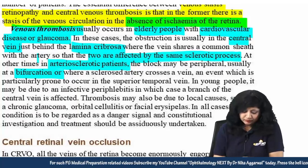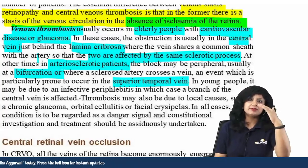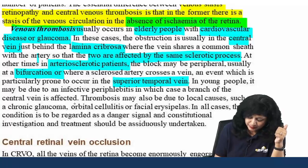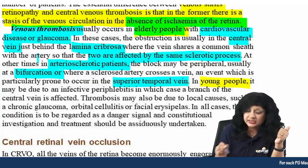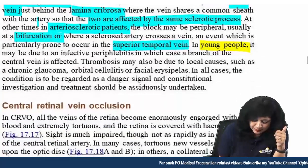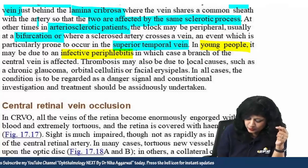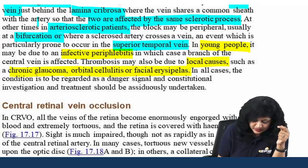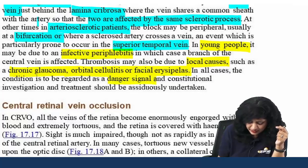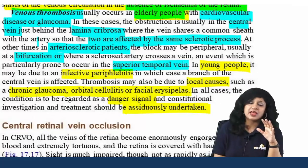Arteriosclerotic block may be peripheral or at the bifurcation, and venous thrombosis is particularly prone to occur in the supra-temporal vein. In young people, it may be due to infective periflebitis affecting a branch of the central vein, or local causes such as chronic glaucoma, orbital cellulitis, and partial erysipelas. In all cases, the condition should be regarded as a danger signal, requiring constitutional investigation and treatment.